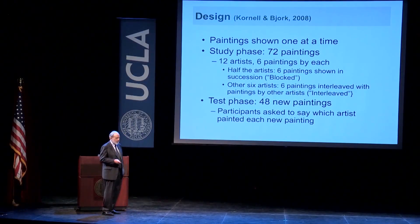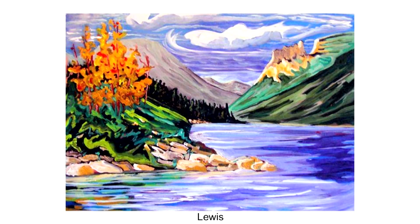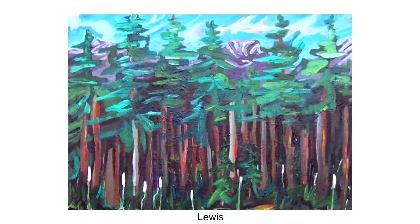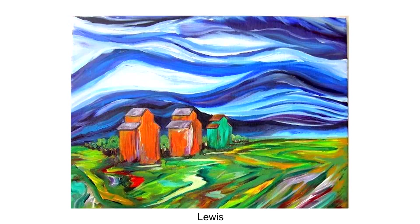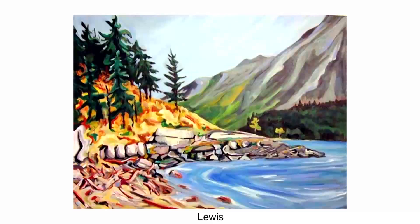I'm going to give you a feeling for this by showing you an example. This would be an example of massed/blocked: that's a painting by Lewis, another one by Lewis, another one by Lewis — are you getting Lewis's style now? Another one by Lewis, another one by Lewis, another one by Lewis. They weren't selected to be good artists.